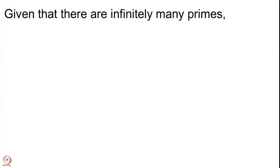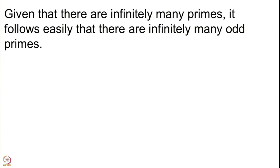Now that we have established there are infinitely many primes, one would ask: how many are even and how many are odd? We know there is only one even prime — that is 2. Once you take 2, all its multiples (the even numbers) cannot be primes because 2 divides them. So all other primes have to be odd. Since there are infinitely many primes, it follows very easily that there are infinitely many odd primes.